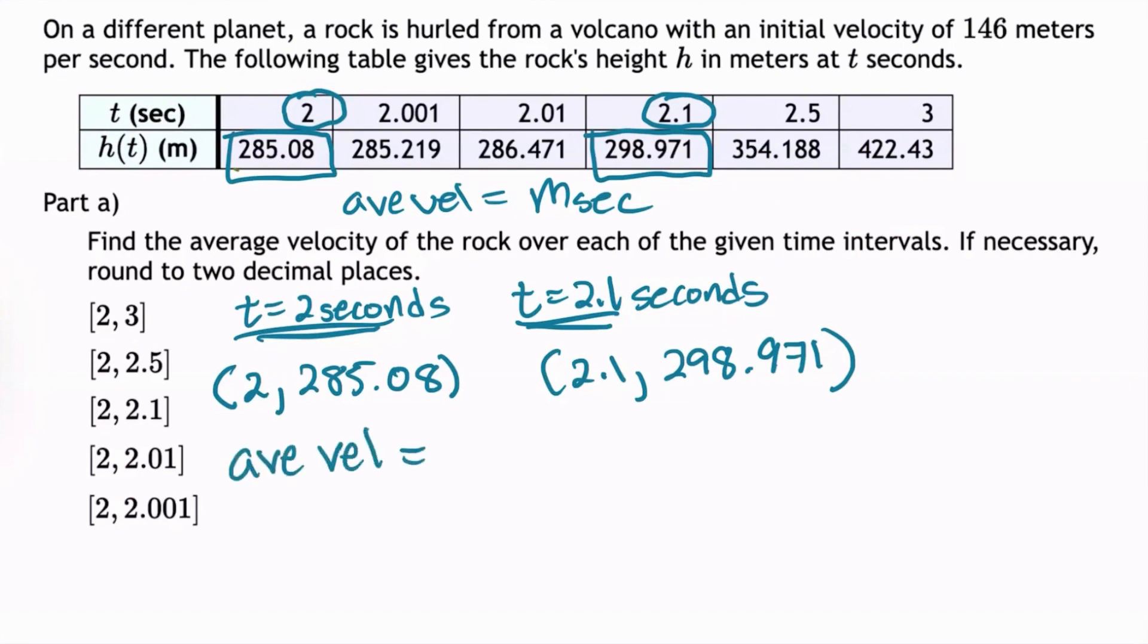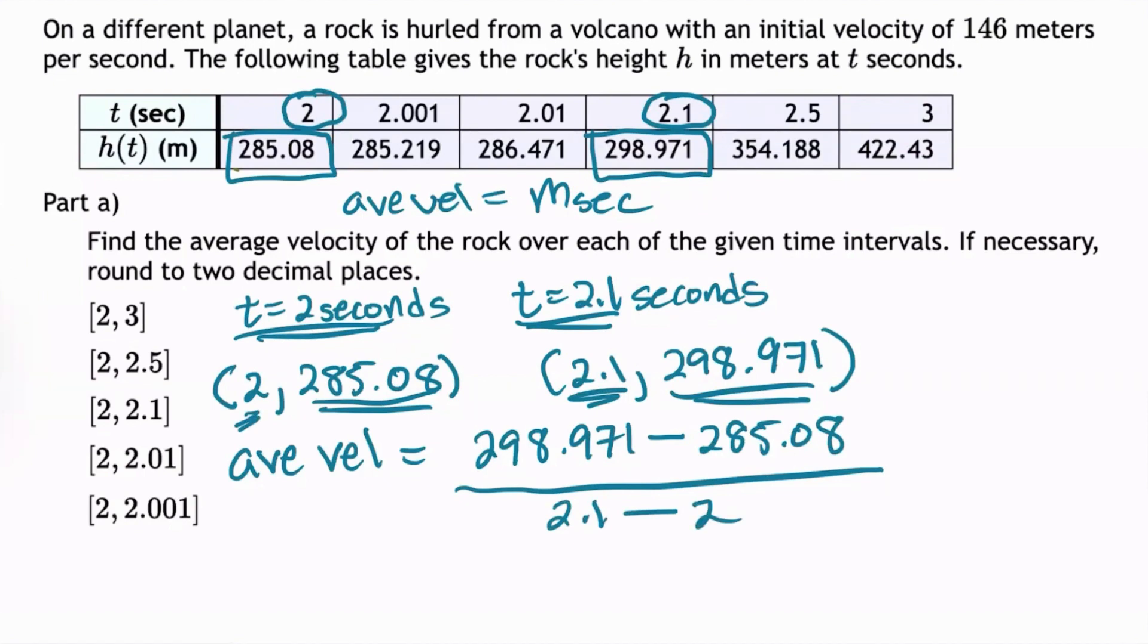So the average velocity is the slope of the secant line, which is the difference in the outputs, 298.971 minus 285.08, divided by the difference in the inputs, which is 2.1 subtract 2. And performing the arithmetic on the right-hand side gives us an average velocity of 138.91 meters per second.